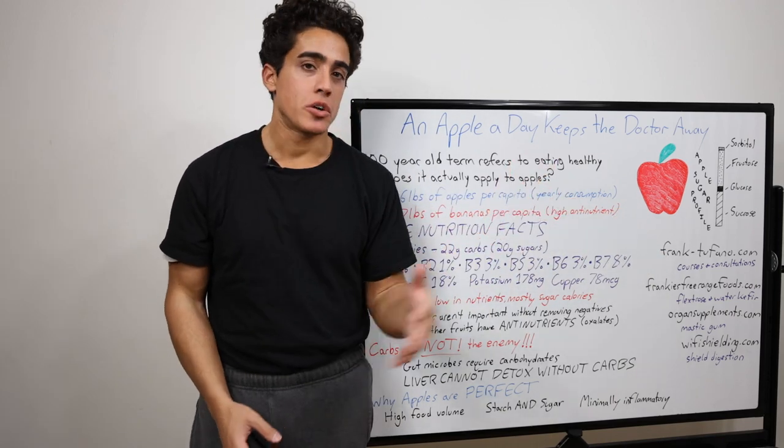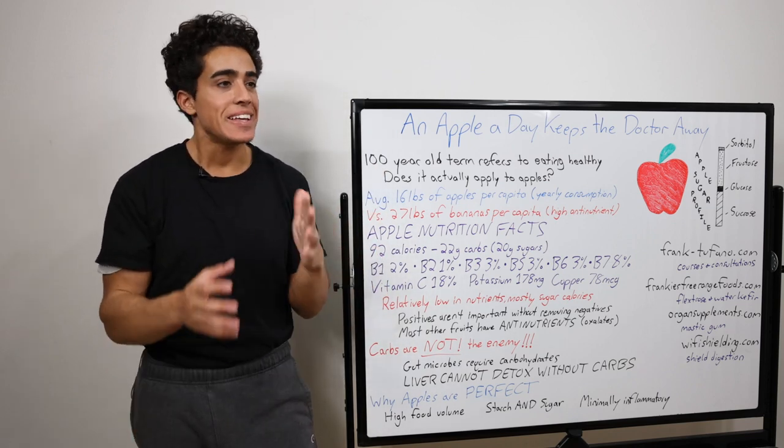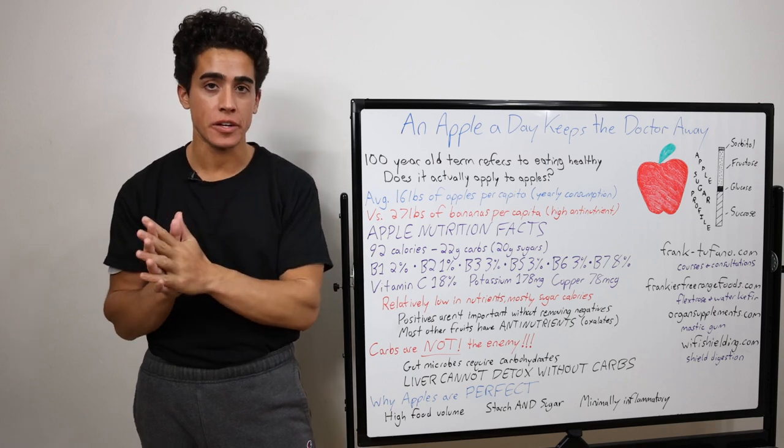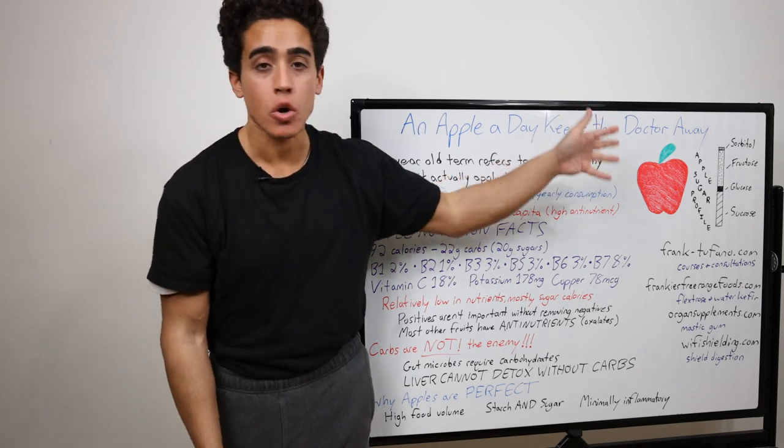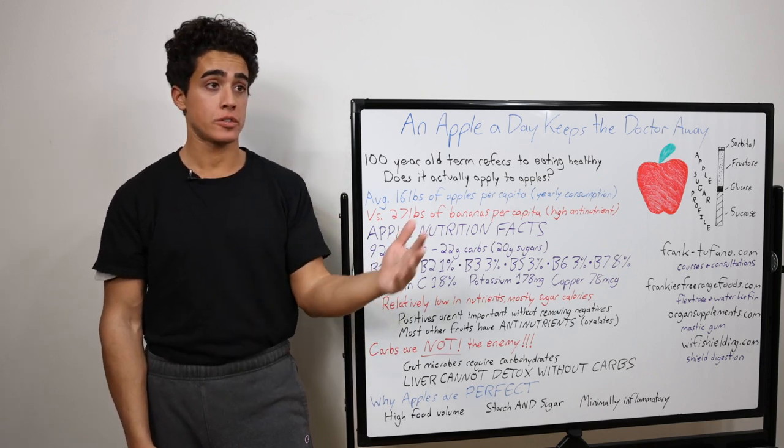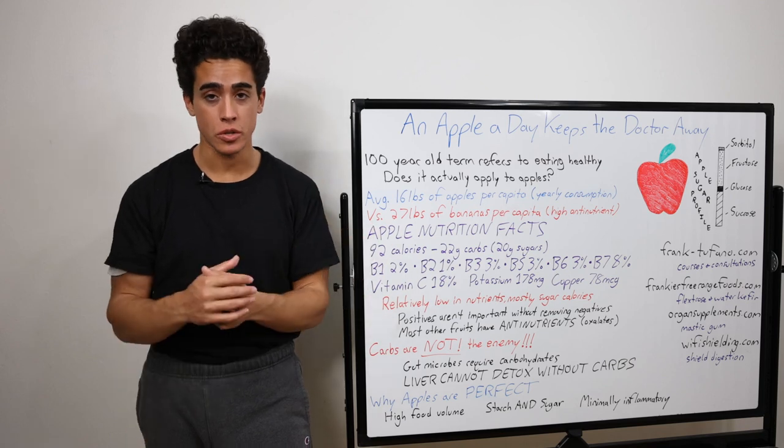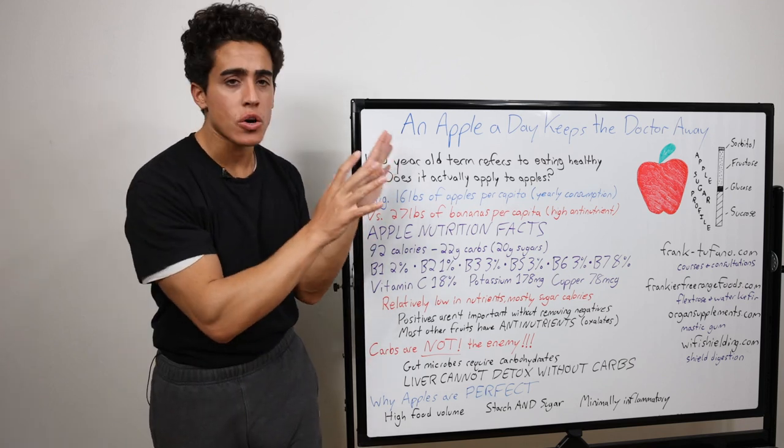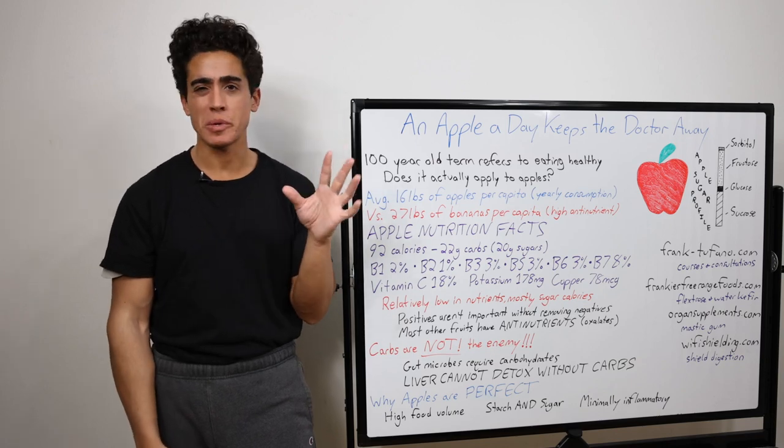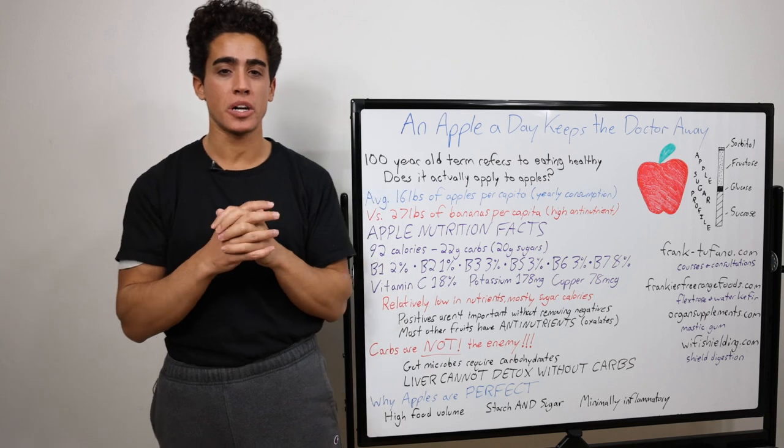Now, whether those ratios are dependent on the type of apple or the ripeness, it's really up in the air because the studies don't say anything definite. I saw some that said golden delicious apples have the highest glucose content. Other studies are saying that Fuji apples had a higher glucose content and a lower fructose content. Either way, they're all pretty similar with the exception of the Granny Smith apples, which are much higher in starch, and I'm not really too much of a fan of them.